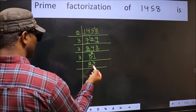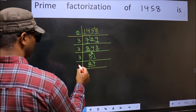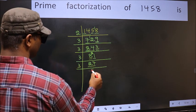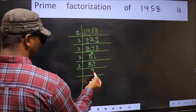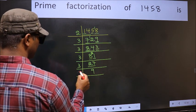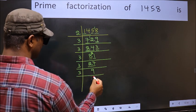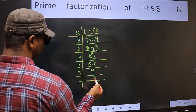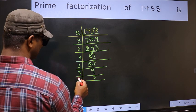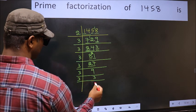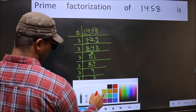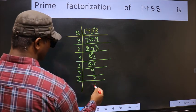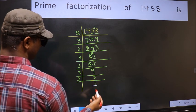Now here we have 27. 27 is 3 nines 27. Now we have 9. 9 is 3 threes 9. Now we have 3 — 3 is a prime number, so 3 ones 3. So we got 1 here.